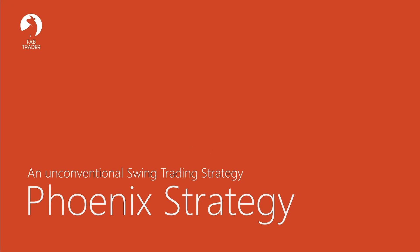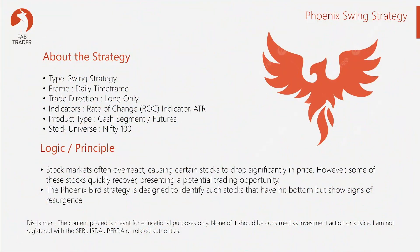The PhoenixBird, as you all know, is that mythical bird that rose from the ashes after it was burned down. This bird is mostly anecdotally compared to things that bounce back into prominence after being pushed down to the floor. In this case, we are looking at stocks that faced a similar situation. The stock market sometimes — in fact, most of the time — overreacts. Certain stocks drop significantly in price for no apparent justified reason; it could even be due to some rumor about bad expected financial results, which is later proved as false information. In such cases, the market catches up to reality, and some of these stocks quickly recover. That's exactly what we're looking to exploit here. The PhoenixBird strategy is designed to identify stocks that have hit bottom but show signs of resurgence, capitalizing on their potential rebound.